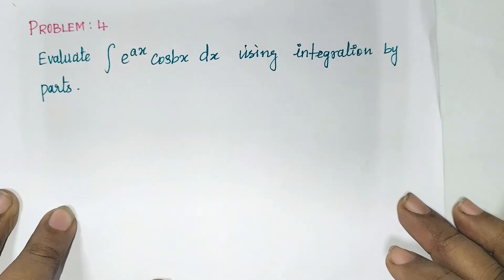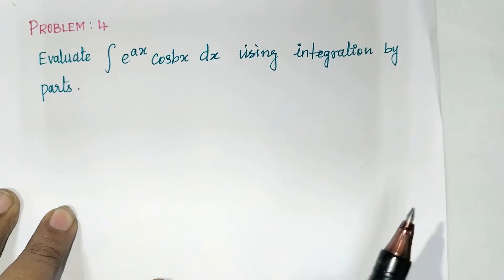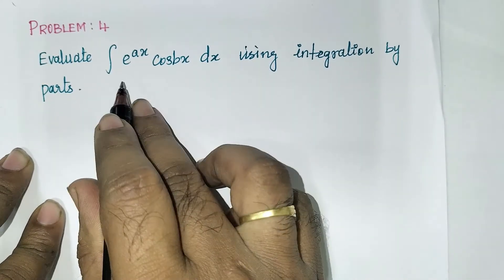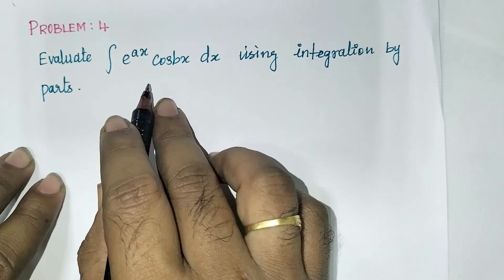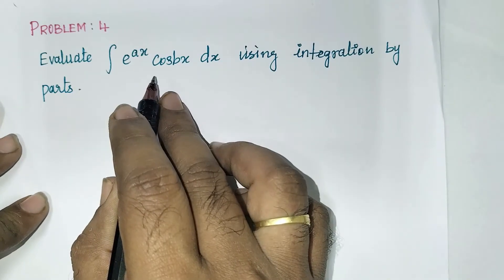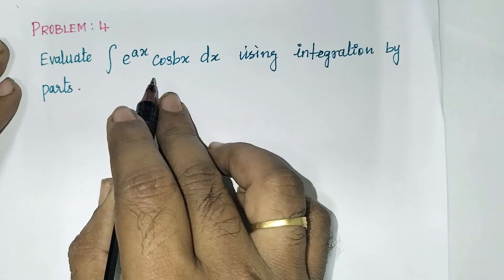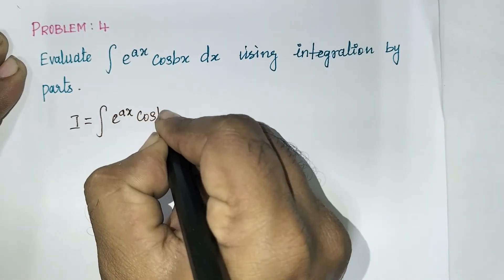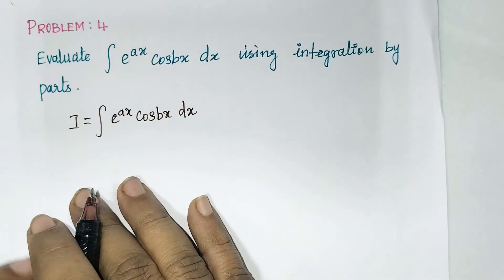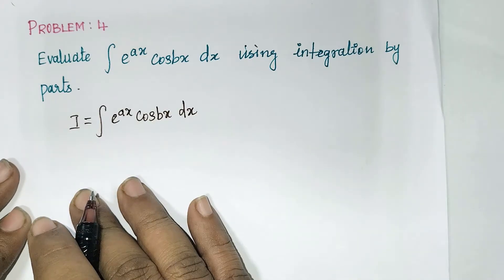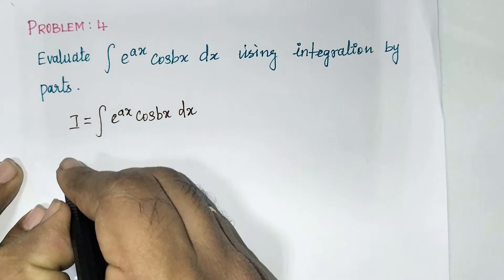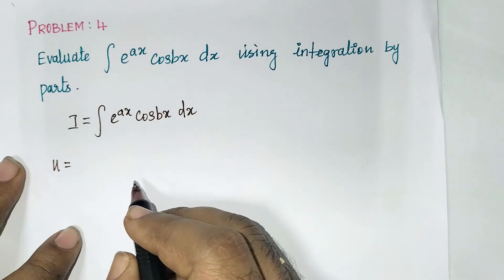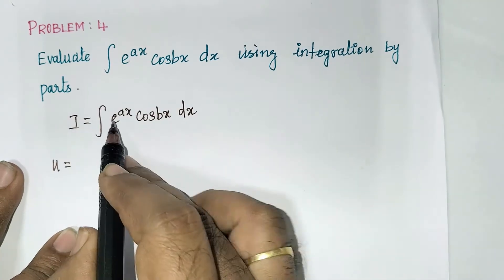Welcome to career guidance. In this video I am going to continue the integration by parts module. Here I take the integral of e^(ax) cos(bx) dx. This problem I will solve based on integration by parts. This result is important and you will use it in higher semesters as a formula. We are going to derive this result. You can take I equal to the integral of e^(ax) cos(bx) dx. To apply integration by parts we should know which one is u and which one is dv. You choose using the ILATE concept: I is inverse, L is logarithmic, A is algebra, T is trigonometry, and finally E is exponential.